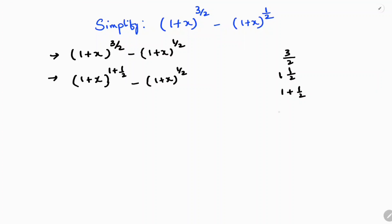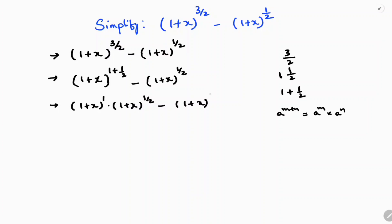Now, using the laws of exponents, a power m plus n can be written as a power m into a power n. So (1 + x) whole power 1 plus 1 by 2 becomes (1 + x) whole power 1 into (1 + x) whole power 1 by 2, minus (1 + x) whole power 1 by 2.